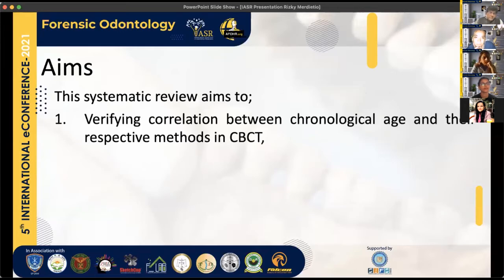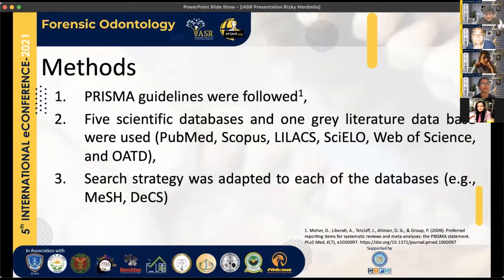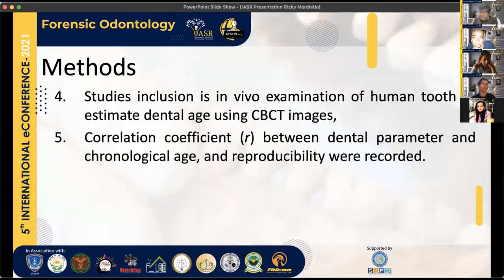This systematic review aims to examine the correlation between chronological age and respective methods in CBCT, as well as the reproducibility of those methods. We used PRISMA guidelines and searched six databases — five scientific databases and one gray literature database (theses and dissertations) — to avoid publication bias. Search strategy was adapted to each database; for instance, we used MeSH terms in PubMed and DeCS in Scopus, LILACS, and others.